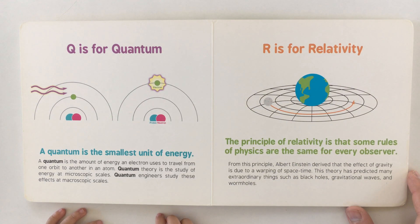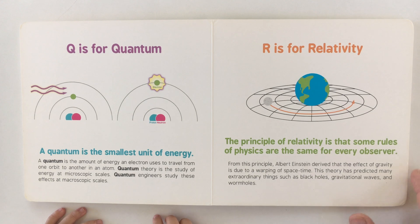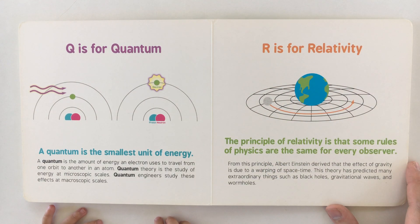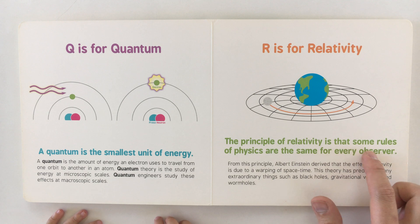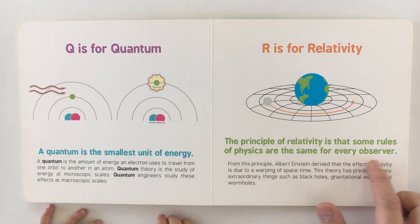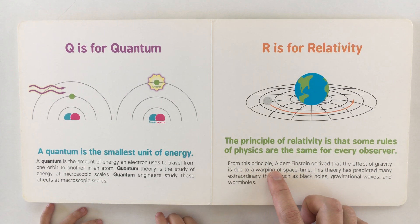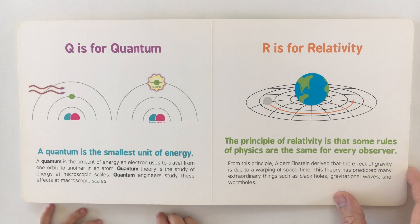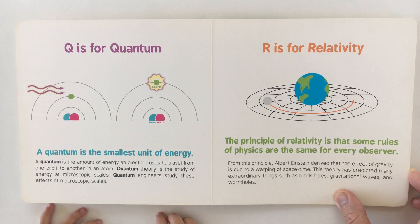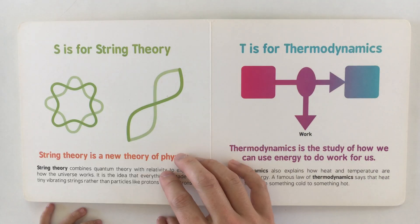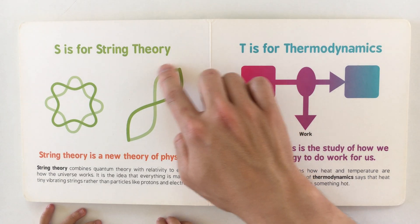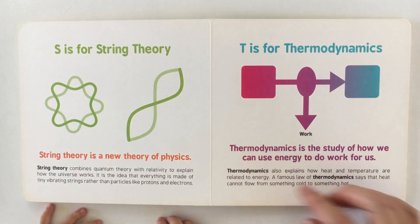R is for relativity — we're almost at the end of the ABCs! The principle of relativity is that some rules of physics are the same for every observer. From this principle, Albert Einstein derived that the effect of gravity is due to a warping of space-time. This theory has predicted many extraordinary things such as black holes, gravitational waves, and wormholes.